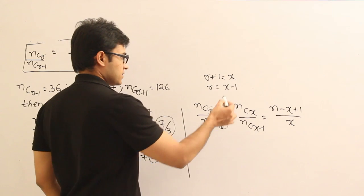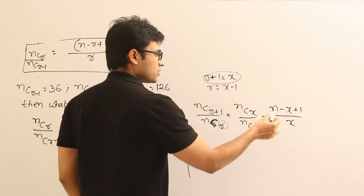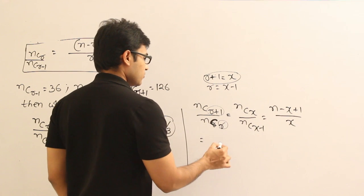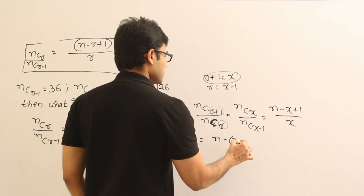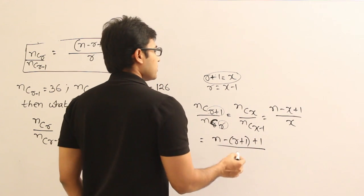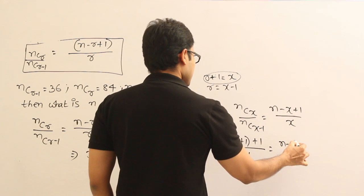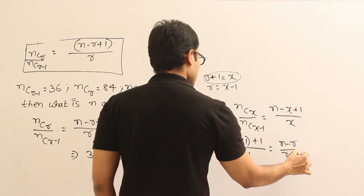Now what is X? X equal to r+1, isn't it? Therefore substitute in place of X, r+1. Then what do you get? (n-r+1+1) divided by (r+1). So that equals (n-r) divided by (r+1).